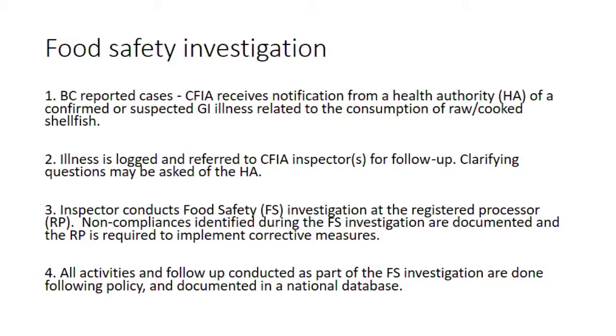Investigators review control plans, processing records, complaint records, and product testing records, interview employees, and review employee training and illness records. Each illness report is assigned a unique identifier, and any non-compliance found is documented. The CFIA follows a protocol called the Food Investigation Response Manual, available online, which describes investigation of food safety issues, risk management strategies, and how recalls should be done.